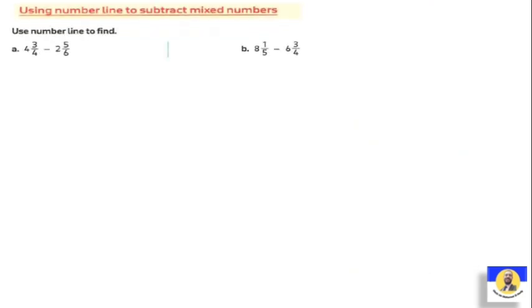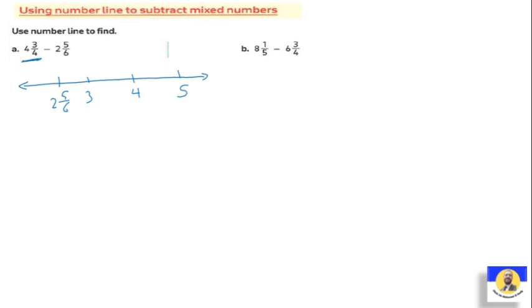Now we can also use the number line to do subtraction of mixed numbers. We start from two and five over six on the number line, then mark three, then four, then five. We want to reach four and three quarters. From two five over six, we add one over six to reach three.